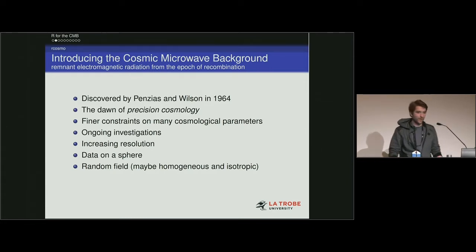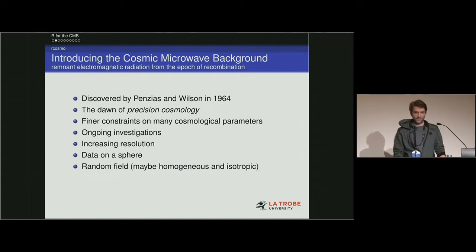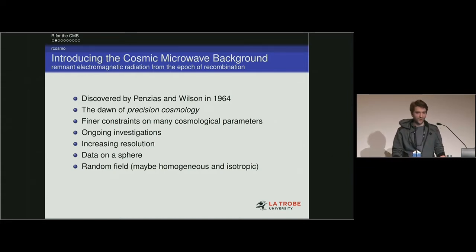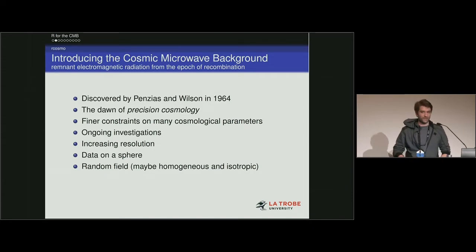The CMB can be thought of as a random field. A random field is like a scalar field except the scalars are random variables — it's a function associating a random variable to points in space, and it's potentially homogeneous and isotropic.